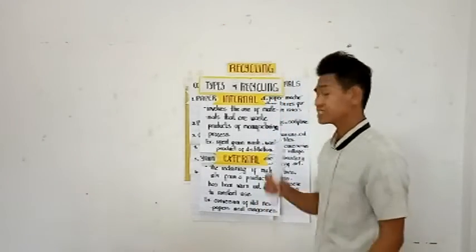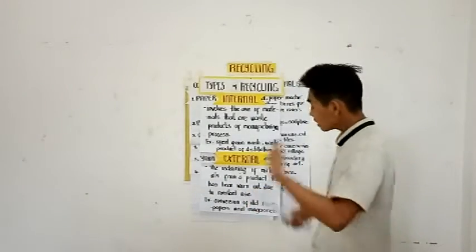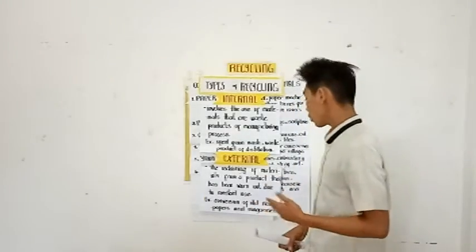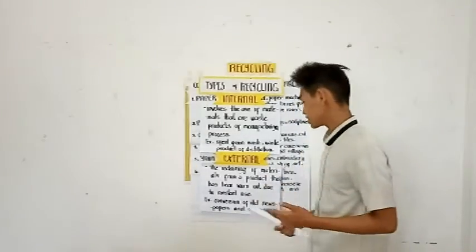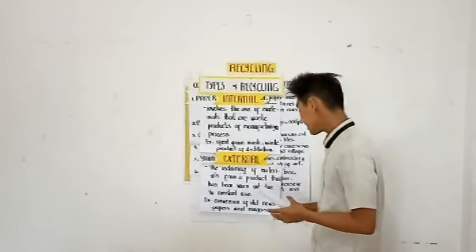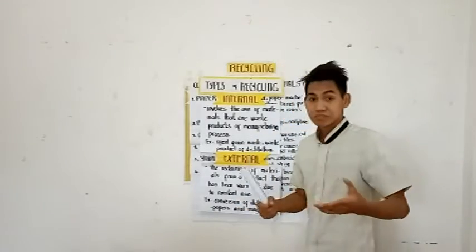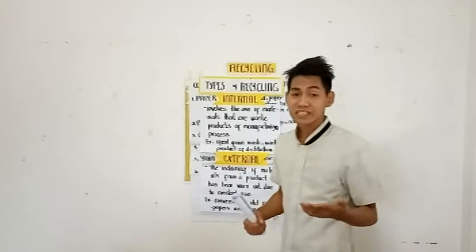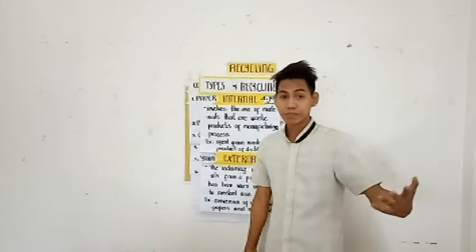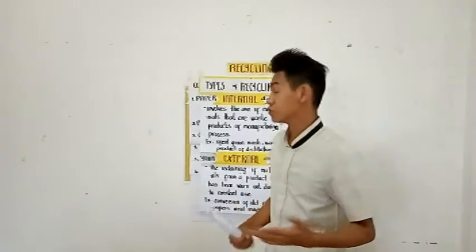The second type is external recycling. External recycling is the reclaiming of materials from a product that has been worn out due to constant use. One example of external recycling is old newspapers or magazines. These could be used as paper sculpture, paper collage, or any decorative materials in your house or in your project work.